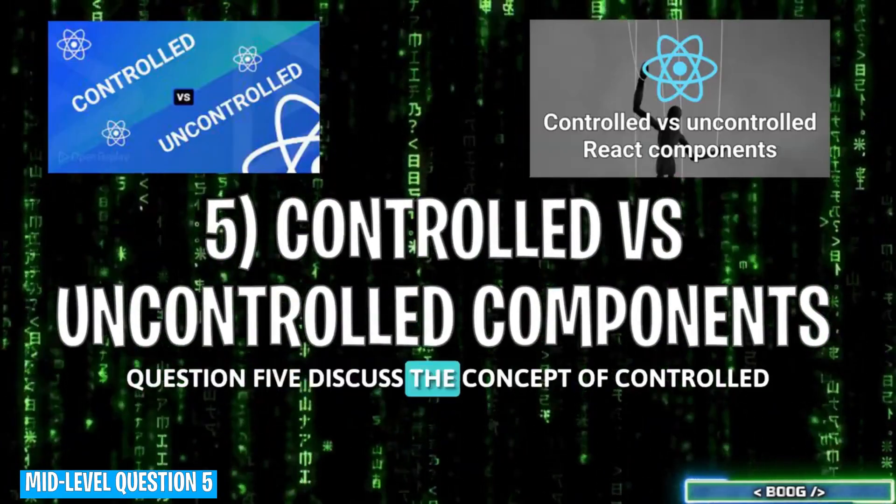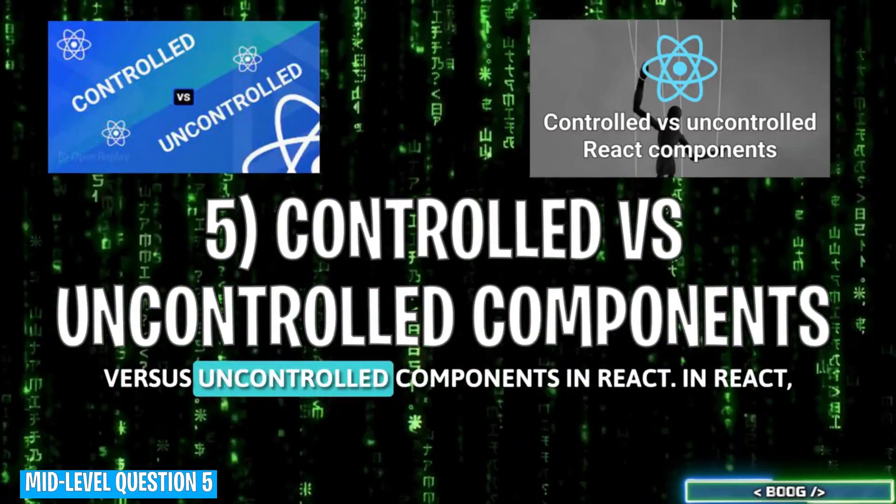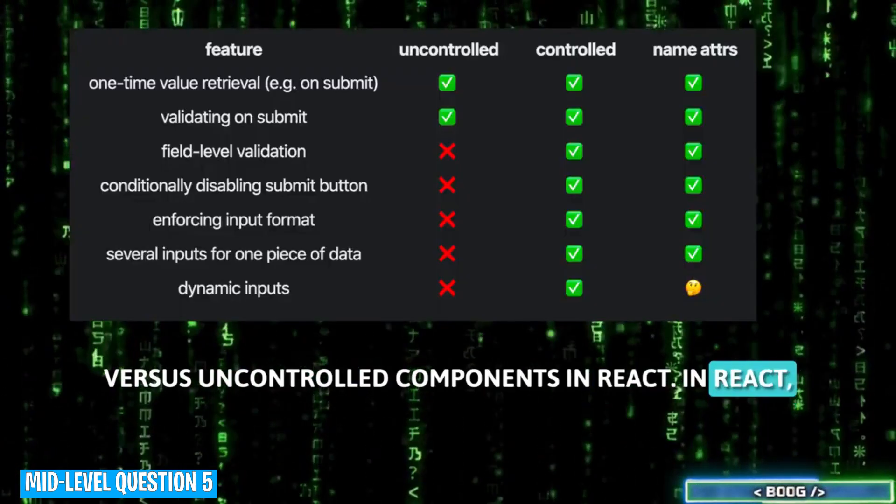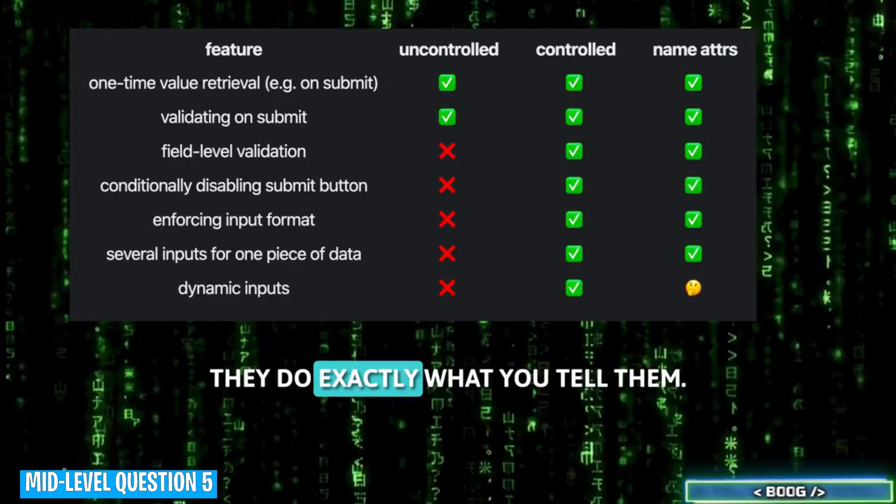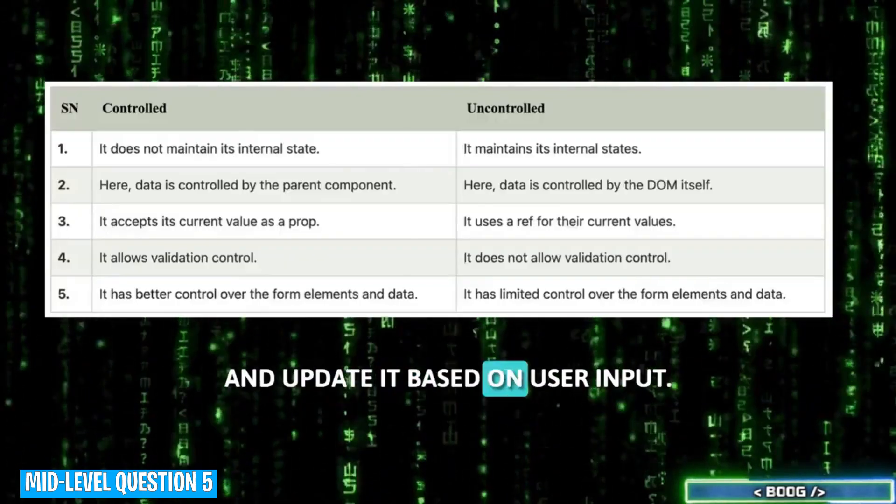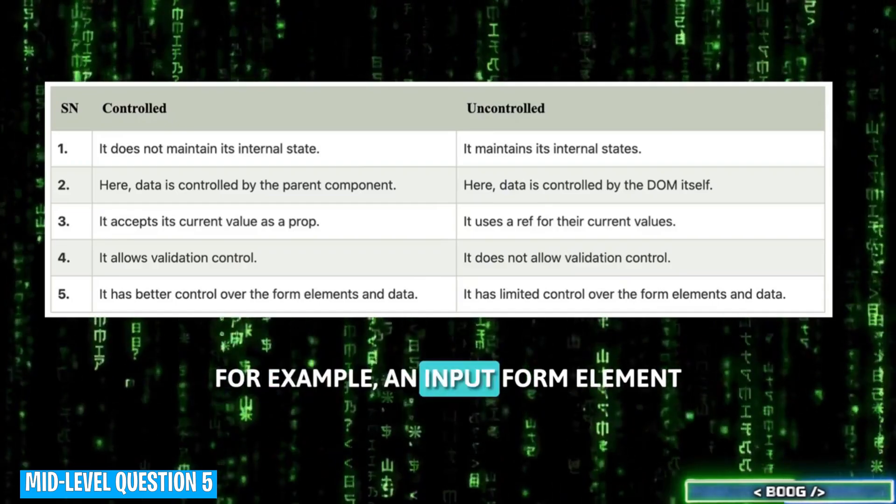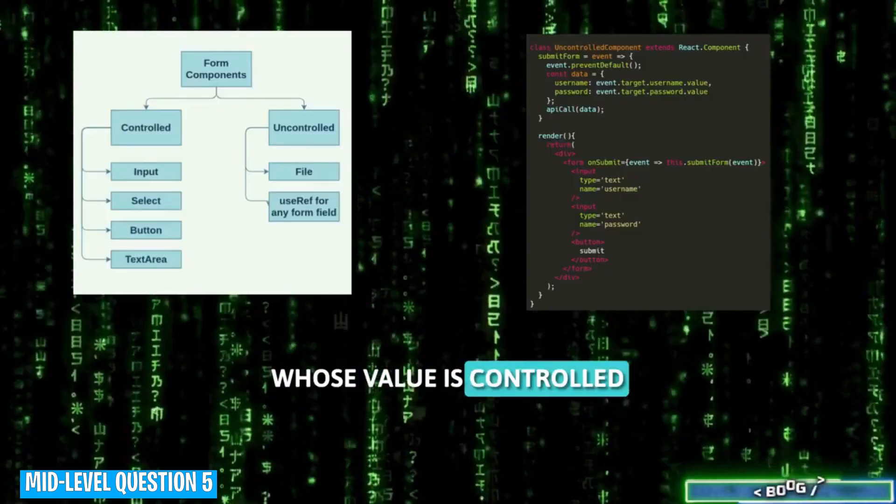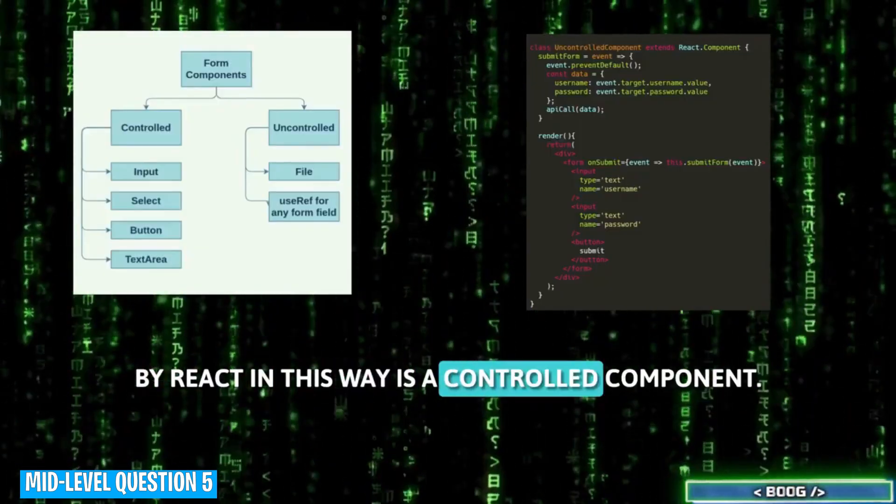Question 5. Discuss the concept of controlled versus uncontrolled components in React. In React, controlled components are like well-trained pets. They do exactly what you tell them. You manage the form data with state and update it based on user input. For example, an input form element whose value is controlled by React in this way is a controlled component.